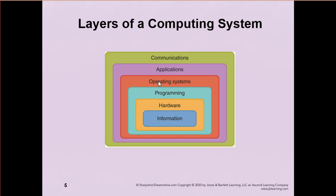Above that is the operating system — that's like Windows, Linux, or Mac operating systems. Those allow the user, coming from the outside, to work with the system software, which handles the hardware, which gets to the data. Operating systems come with a bunch of functionality, and we'll be spending a week talking just about that. Above that are applications — your games, word processor, spreadsheet program, or any kind of application that runs on a computer that casual users are going to use.